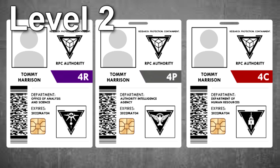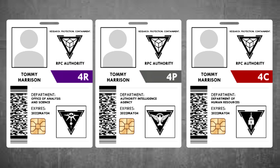Level 2 security clearance is generally given to security and research personnel that require direct access to detailed data regarding anomalies within containment. Level 2 personnel are mostly security staff, research staff, field agents, and containment specialists.